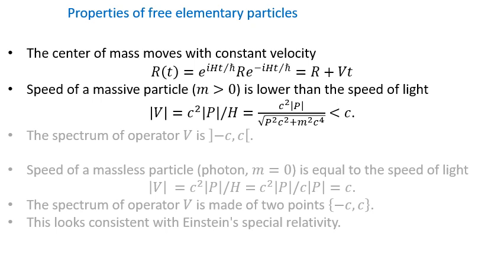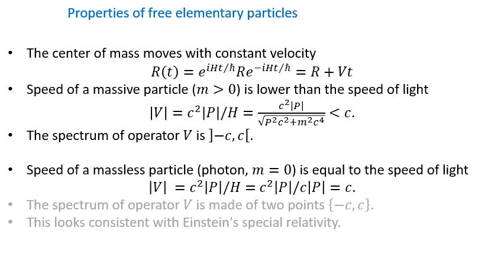If our particle is massive, then this velocity is lower than the speed of light. A more precise statement is that the spectrum of the velocity operator is the segment between minus c and c, which does not include the end points. The speed of a massless particle such as a photon is exactly the speed of light c. In other words, the spectrum of the velocity operator in this case consists of two points: minus c and c. All this seems to be in perfect agreement with special relativity.